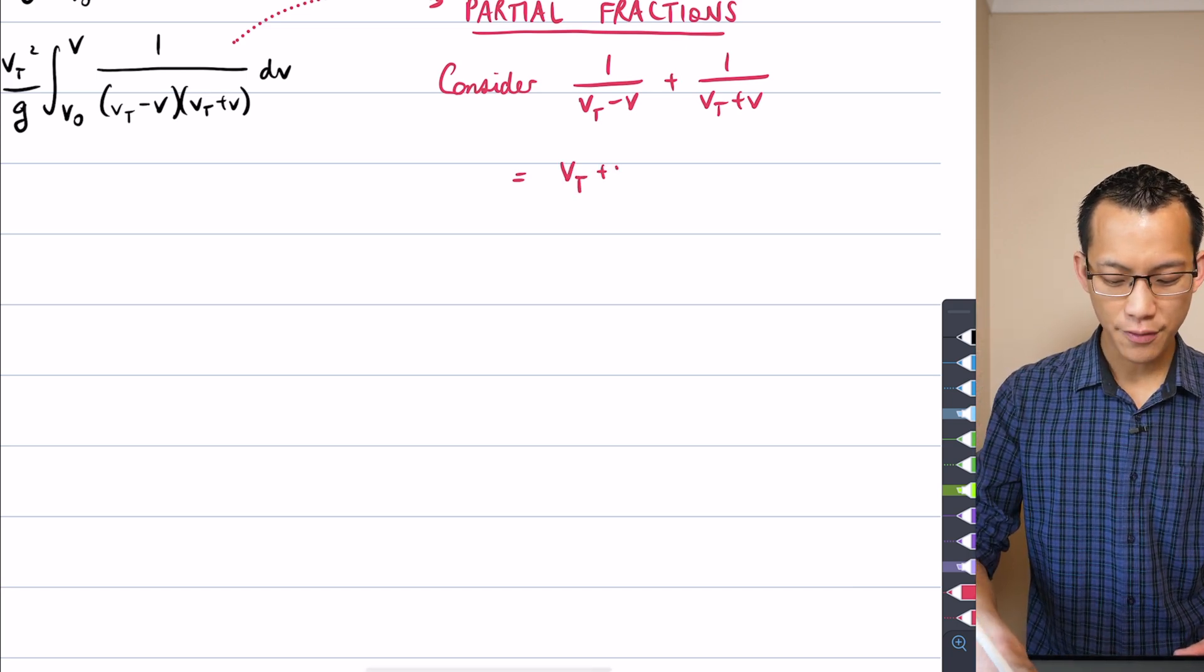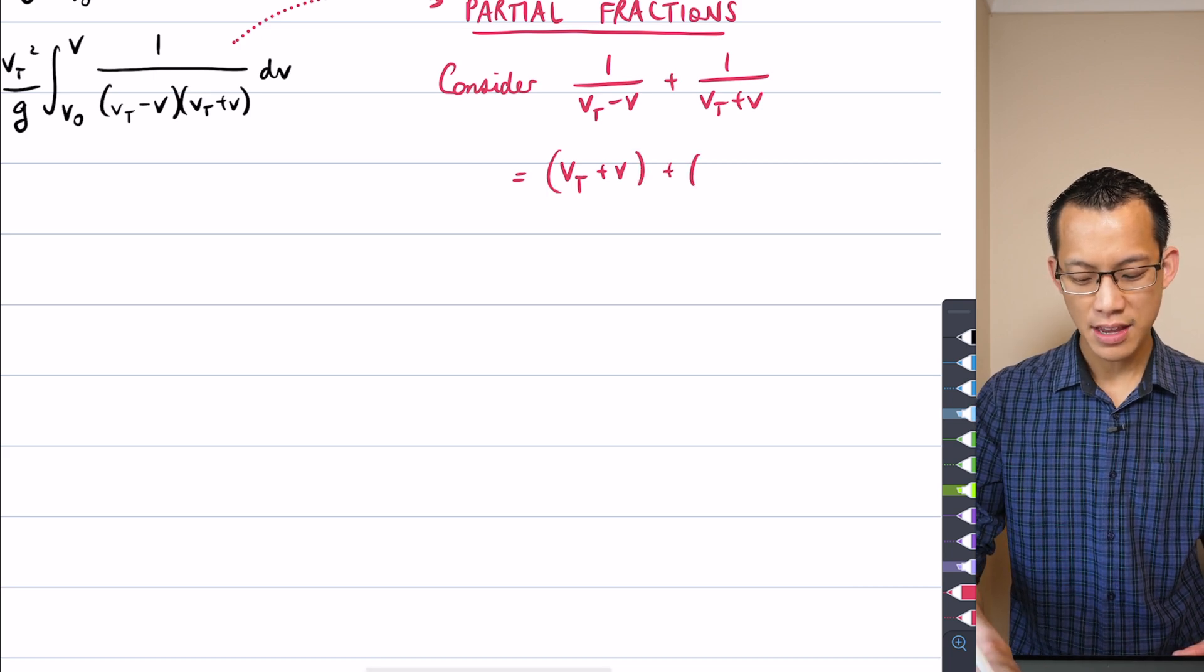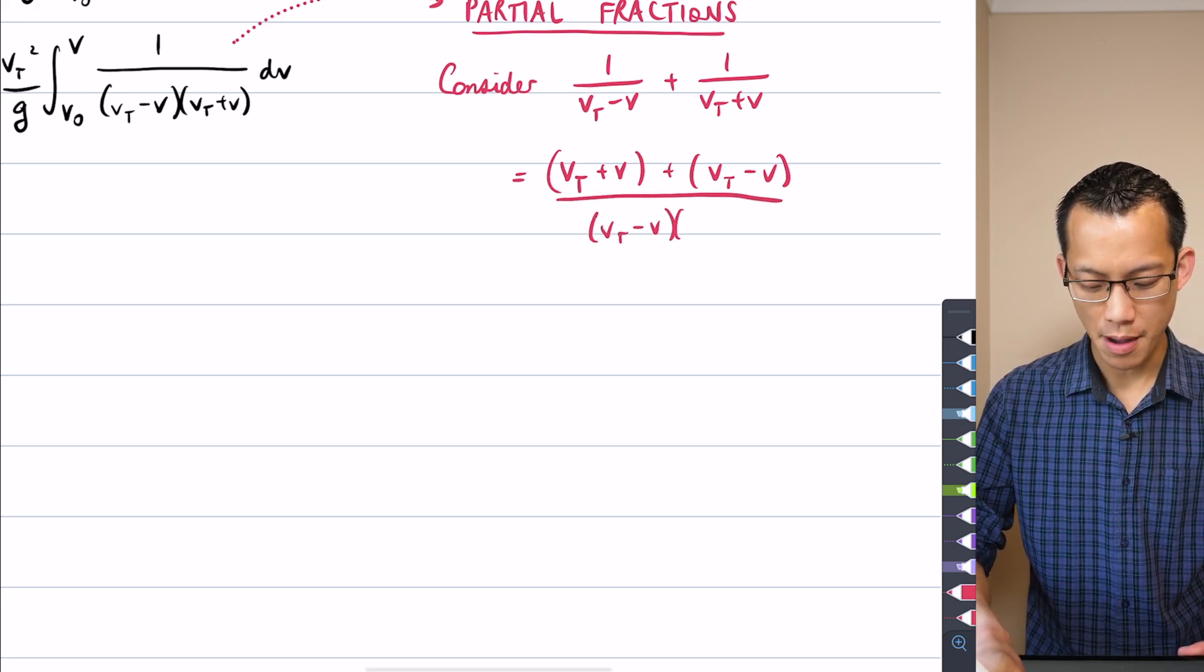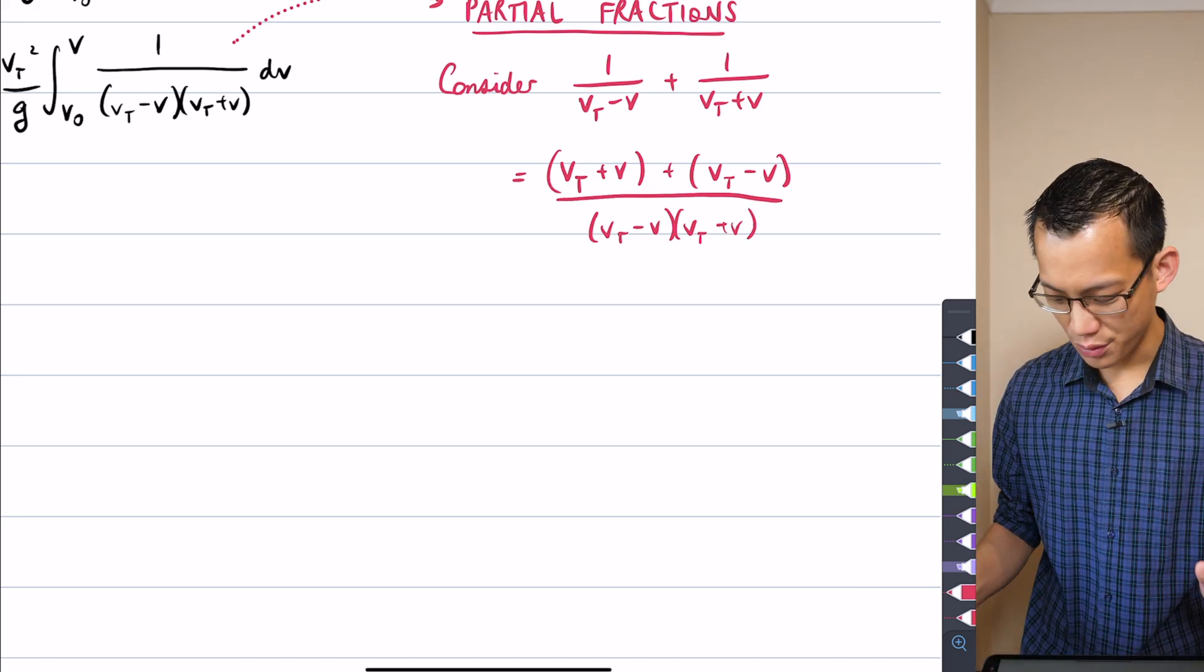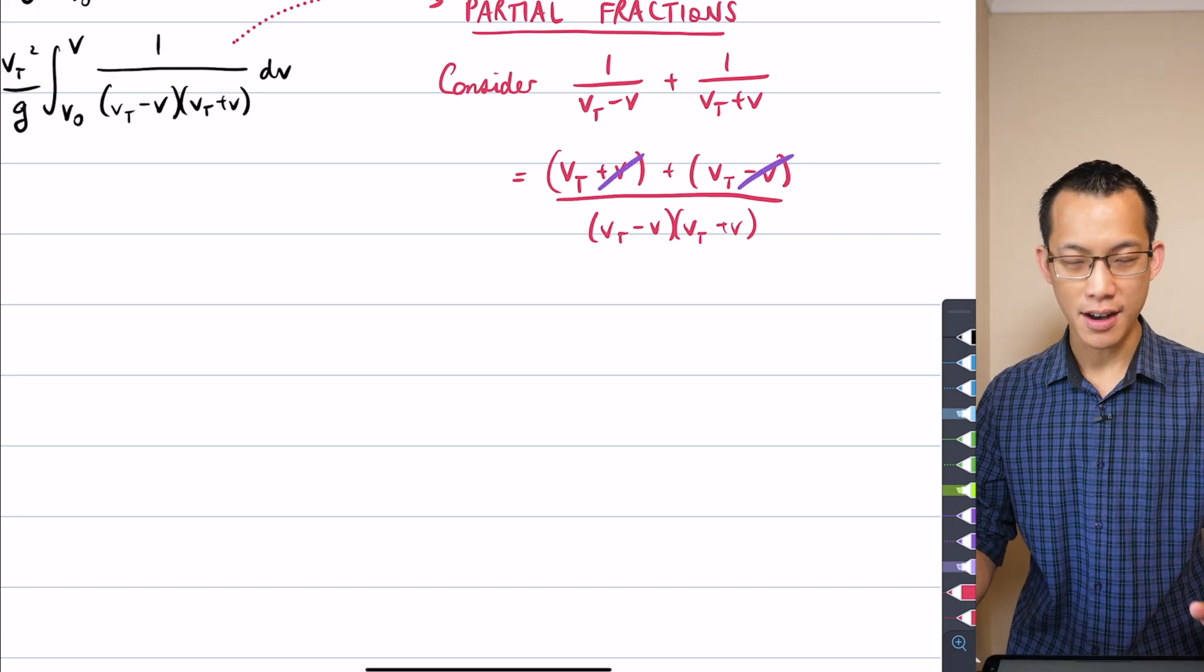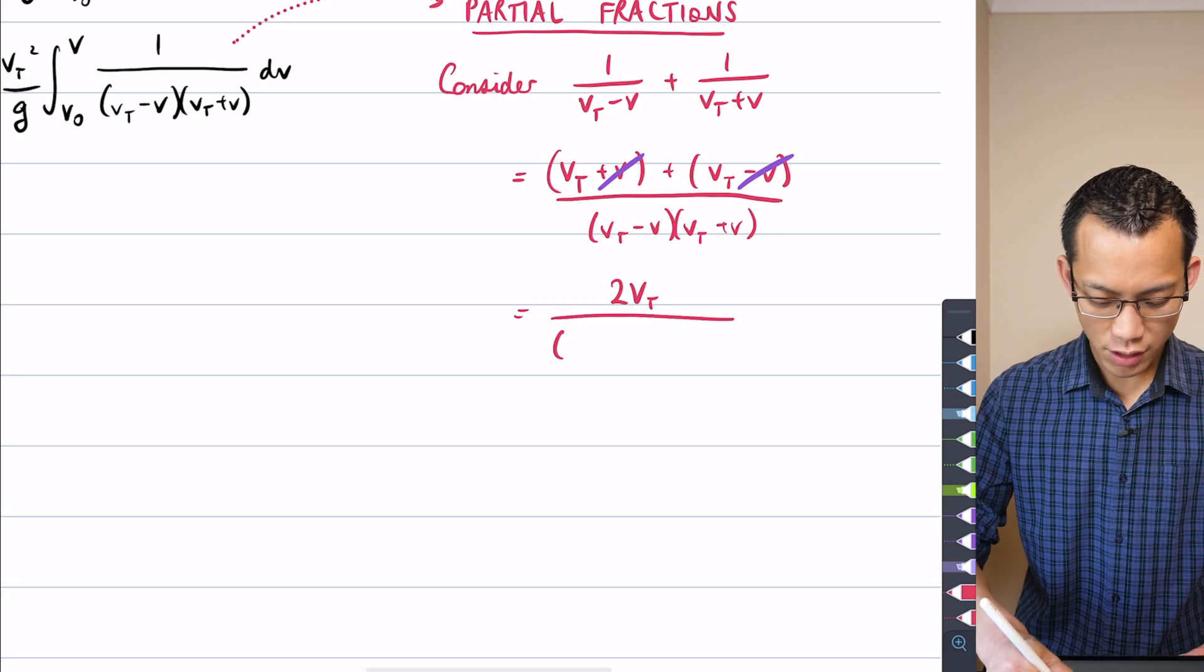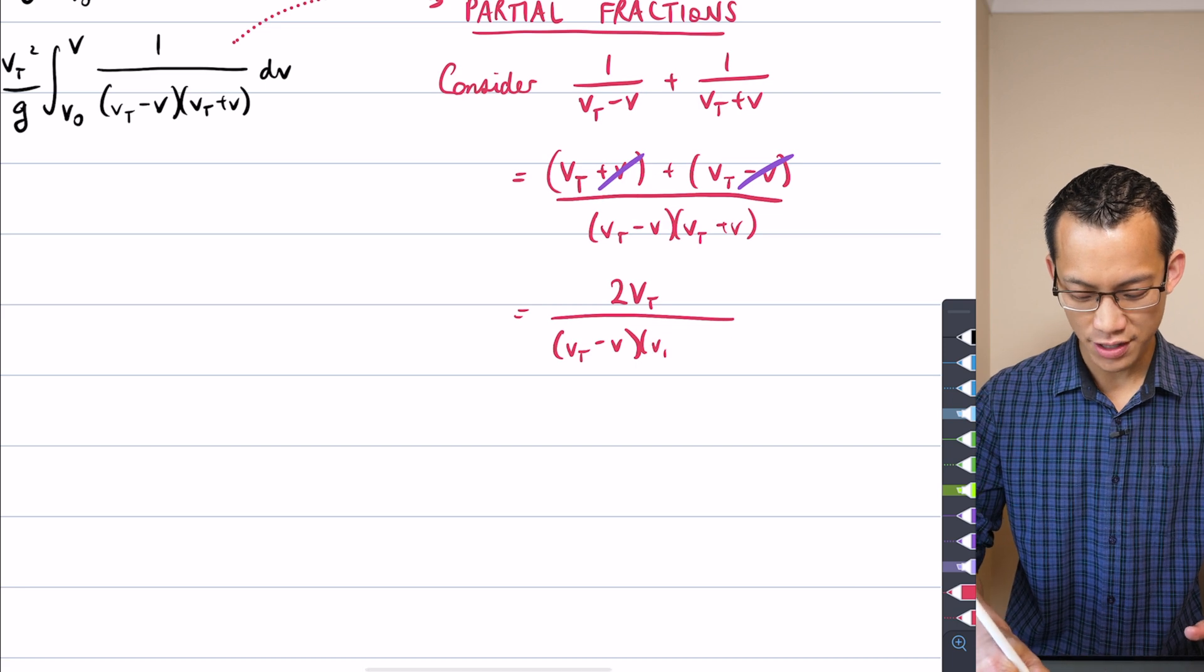When you put together, when you cross multiply to get the common denominator, you get VT plus V on one side and then you get VT minus V on the other. And then this puts us on the common denominator, which we just get by multiplying through. But hold up, you can see these V terms are just going to cancel. This and this, they disappear, so therefore what you're getting is 2VT on the numerator up there.